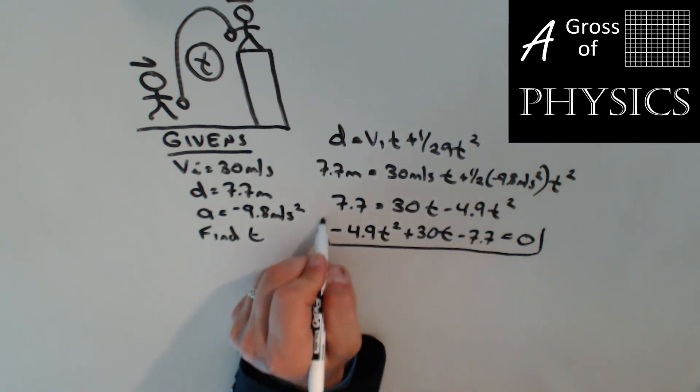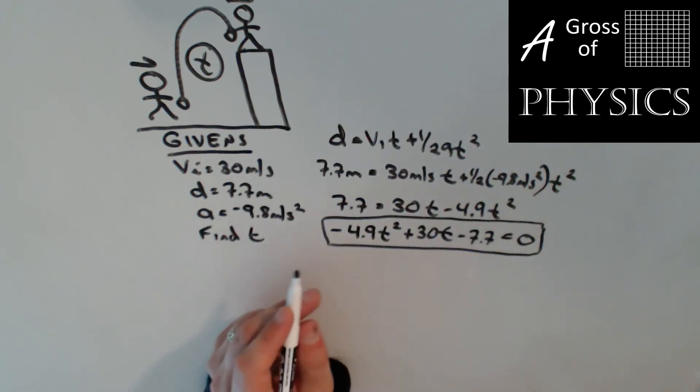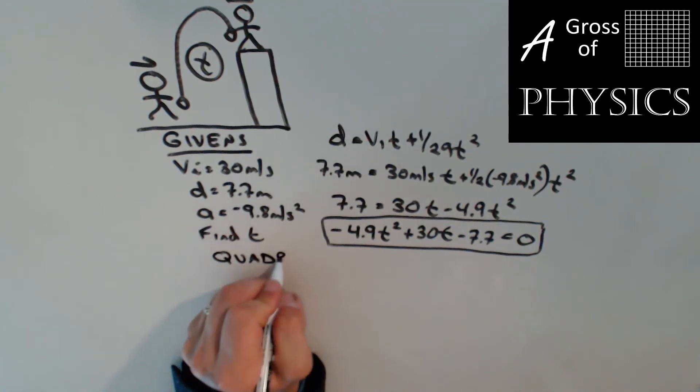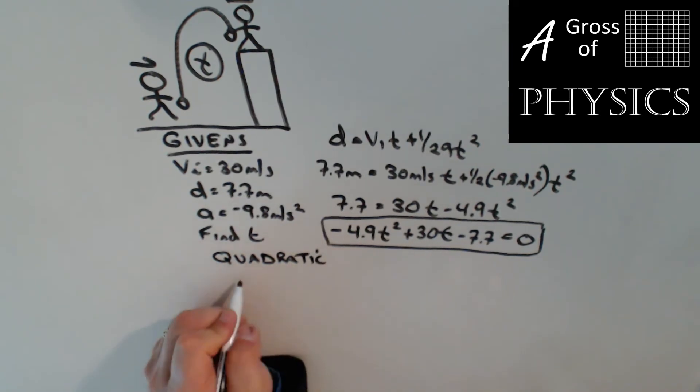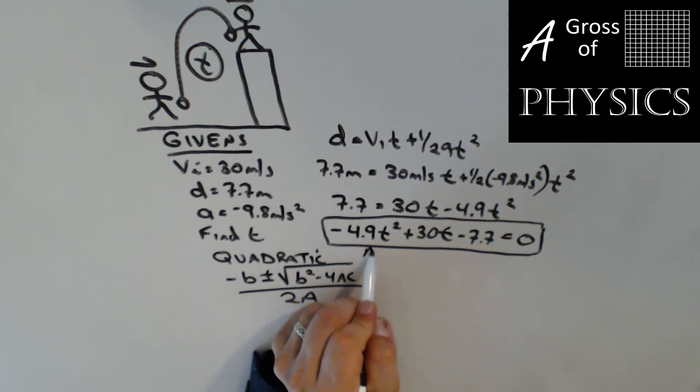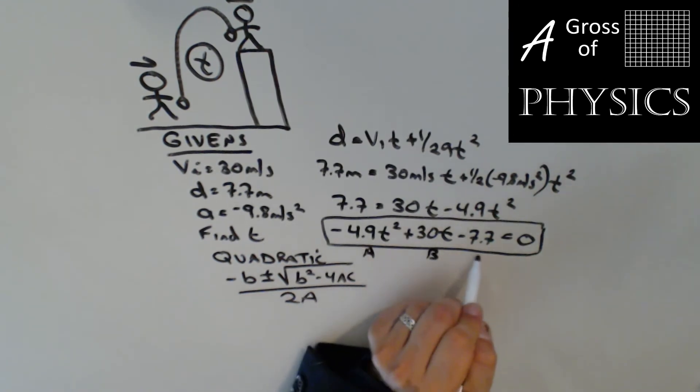Now this format reminds me of something I've done in math class, and that's dealing with the quadratic equation, which is negative b plus or minus the square root of b squared minus 4ac over 2a.